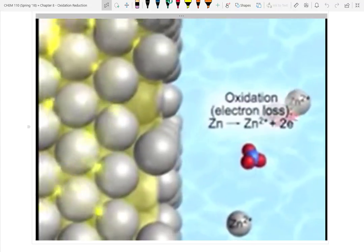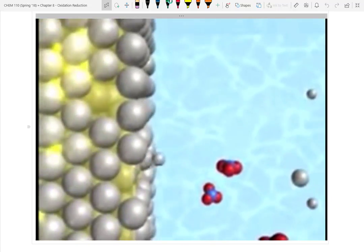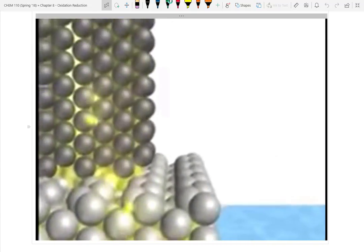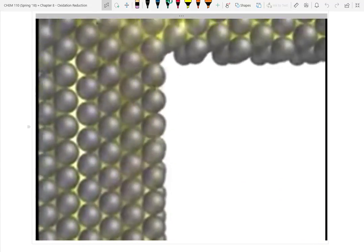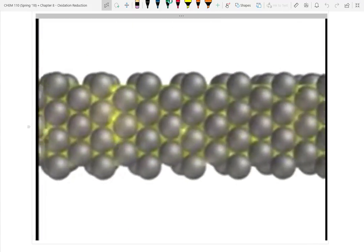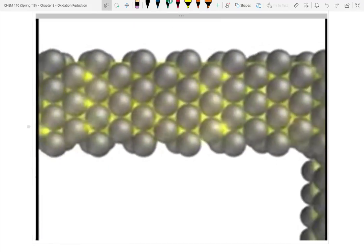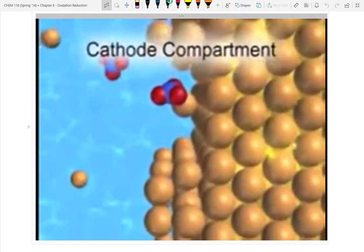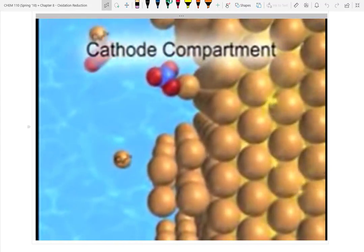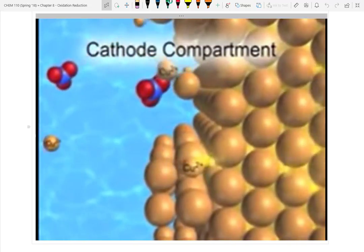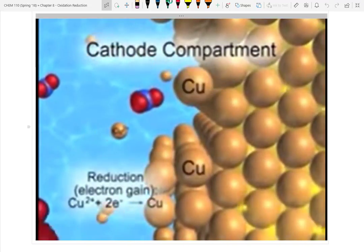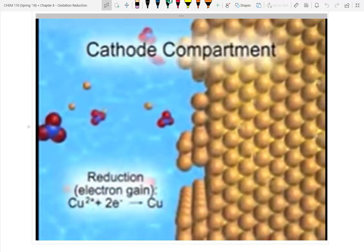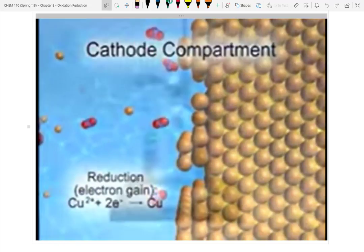Let's zoom into the atomic scale and see how this cell operates. Here at the anode, the site of oxidation, zinc atoms in the metal bar are in contact with the surrounding electrolyte solution. Each atom loses two electrons and becomes a zinc ion, which diffuses into the solution. The electrons given up enter the bar and join the flow of electrons up toward the external circuit. They travel through the wire and flow into the cathode, the site of reduction.